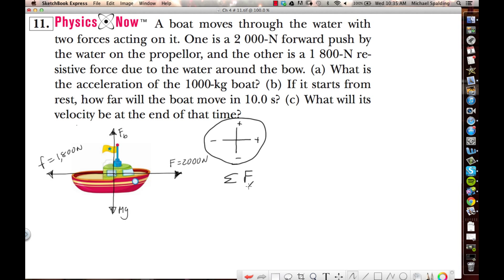So summing forces in the x, we have two x forces. We have 2,000 newtons to the right, so that's plus, and then minus 1,800. That's to the left, that's why we made it negative.